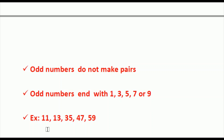Examples: 11 ends with the number 1 and 1 is an odd number, so 11 is an odd number. Next, 13 ends with the number 3 and 3 is an odd number, so 13 is an odd number. Next, 35 ends with 5 and 5 is an odd number, so 35 is an odd number. Next, 47 ends with the number 7 and 7 is an odd number, so 47 is an odd number. And 59 ends with the number 9 and 9 is an odd number, so 59 is an odd number.